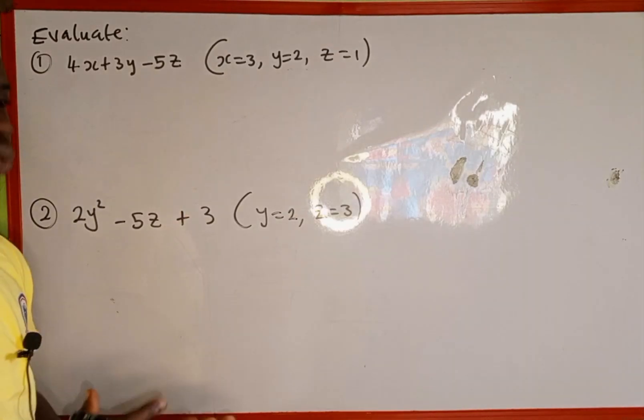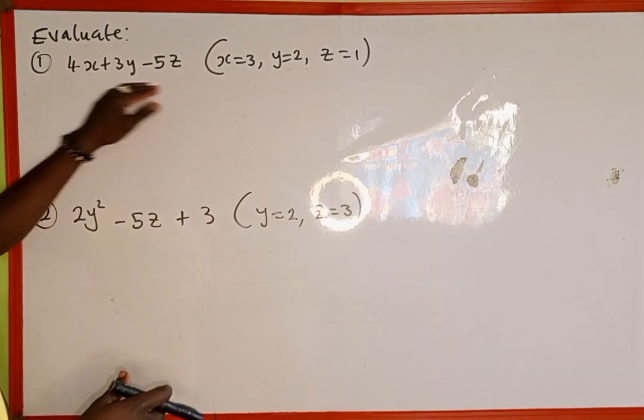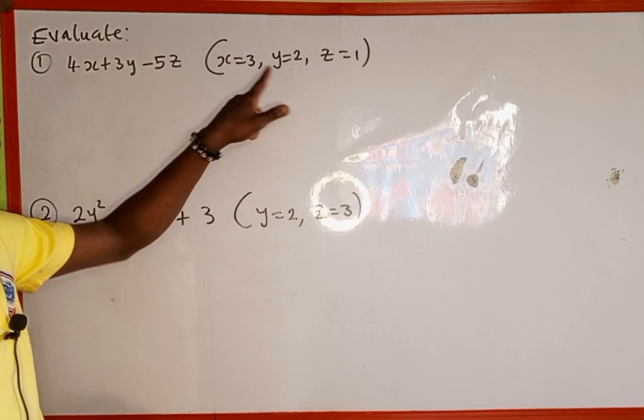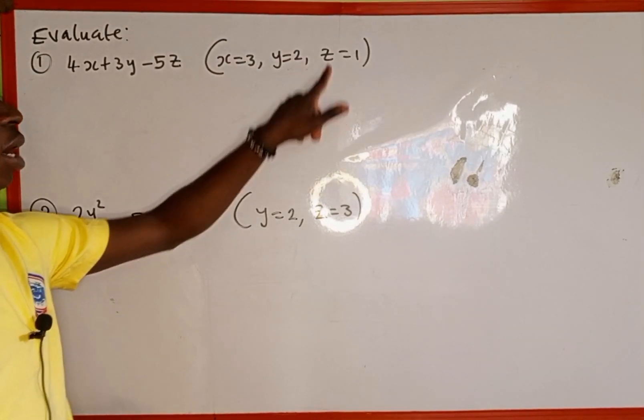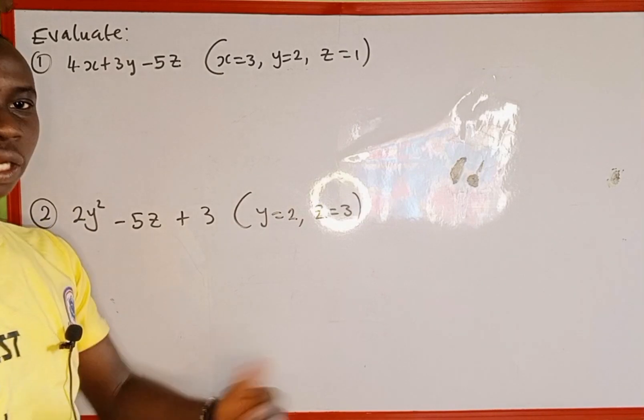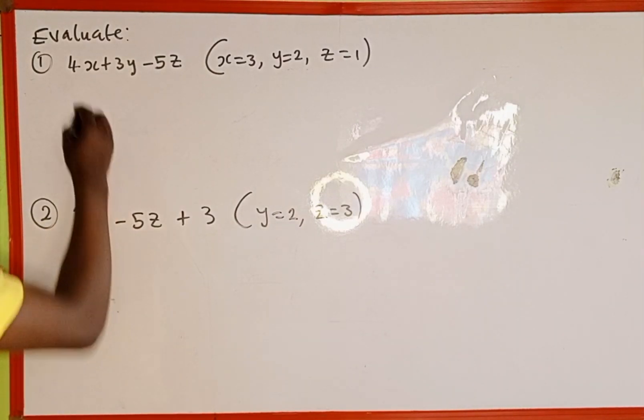This is very simple. What is implied is that in this expression, anywhere we see x we replace with 3, anywhere we see y we replace with 2, and anywhere we see z we replace with 1, then we simplify.